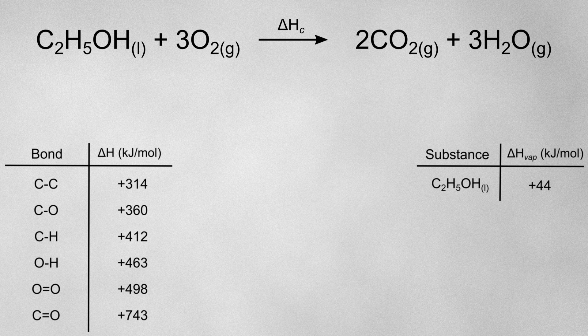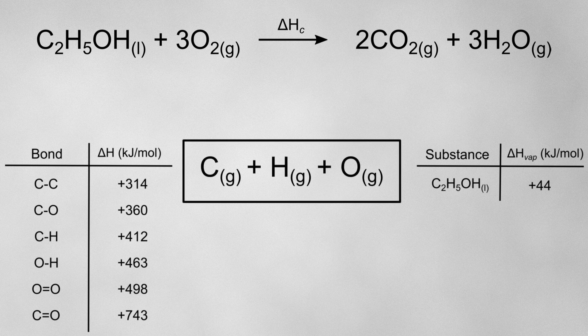To do this, underneath I'll put a box of all of the gaseous atoms that would be formed if we broke all of the bonds in our reaction. Since the bond enthalpy essentially describes the formation of these atoms, I'm going to draw arrows going from my reactants down to the box and from my products down to the box.